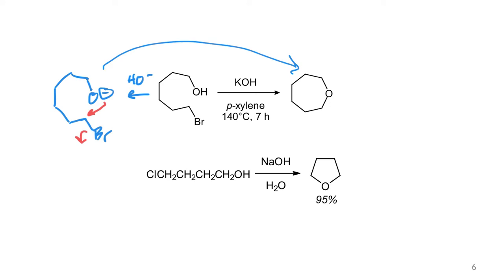The same thing happens in the other example. Here we have a hydroxyl group separated by four methylene groups from a chlorine. Deprotonation of the hydroxyl group gives an anion that performs an intramolecular SN2 reaction. We end up with four carbons and one oxygen in the ring, and we've synthesized tetrahydrofuran.